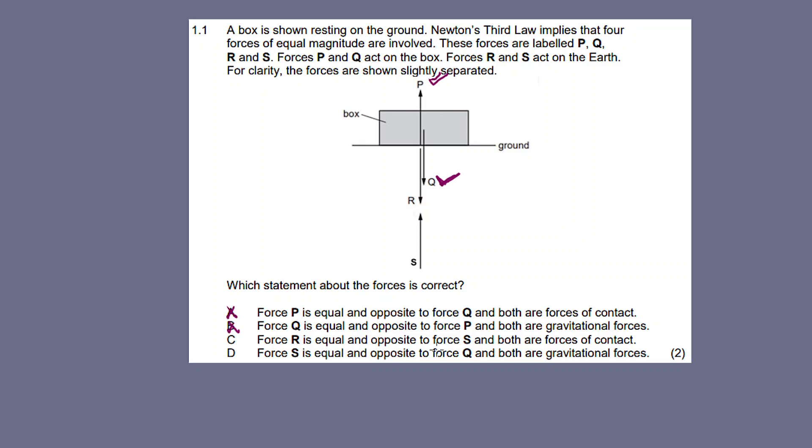Option C: Force R is equal and opposite to force S and both are forces of contact. But S is a gravitational force, the force exerted on the box by the Earth. So C is incorrect.